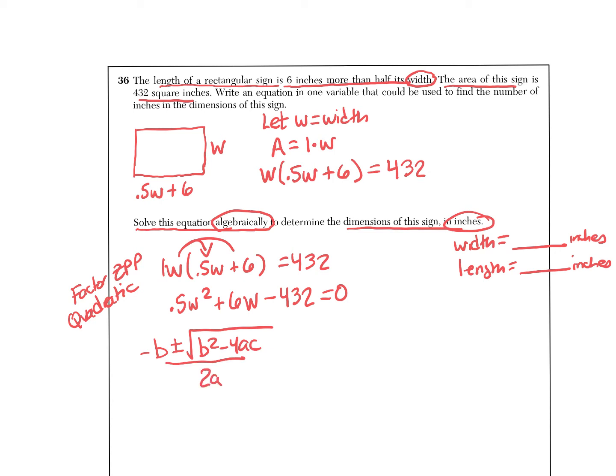So now remember, your a is what's in front of your squared term, your b is in front of your plain just one variable term, and your c is your constant. Remember to take the sign. So there's our a, our b, and our c.